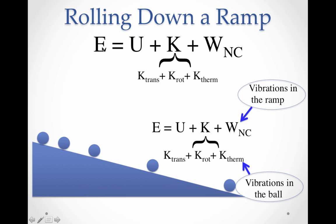Using that model, the total energy in the system initially was the potential energy of the ball. But then the ball starts rolling, and when it starts rolling, notice that it's translating — it's going down the ramp. It's also rotating and spinning, and that's a form of kinetic energy. And then also the molecules in the ball actually started vibrating as well, so there was some thermal energy developing within the ball itself.